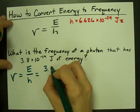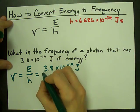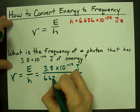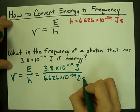The energy is 3.8 times 10 to the negative 19 joules. Planck's constant is 6.626 times 10 to the minus 34 joules seconds.